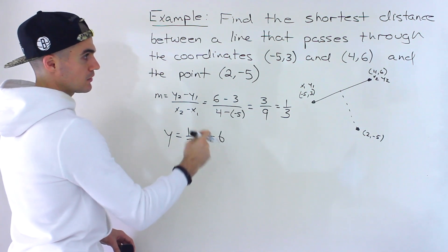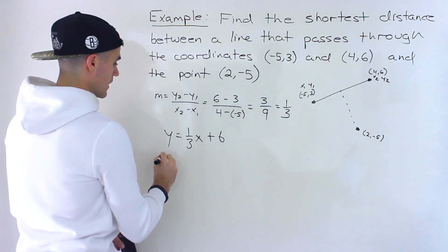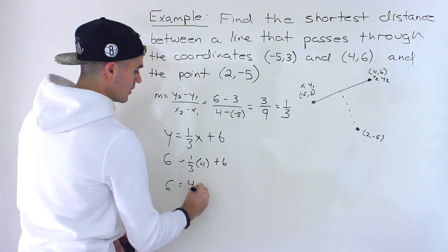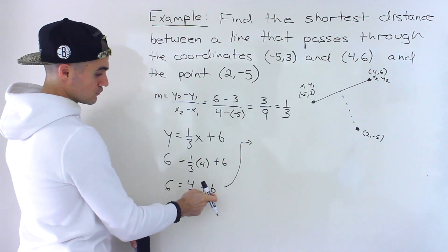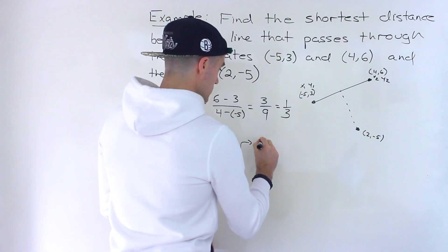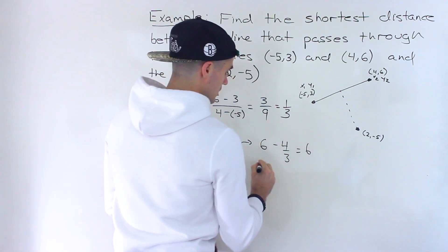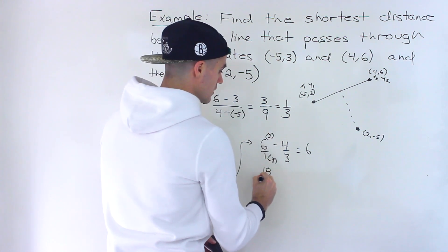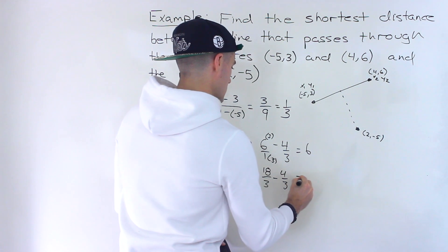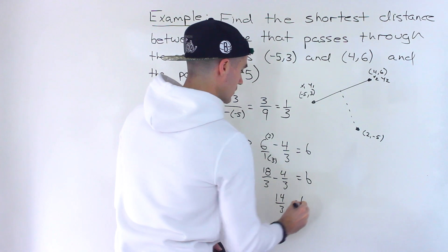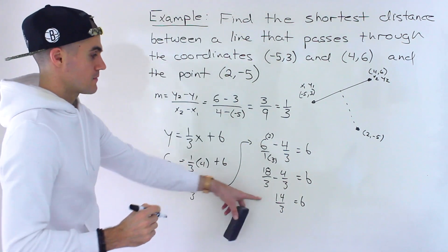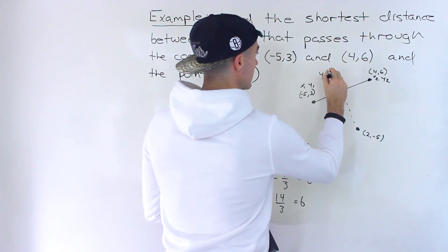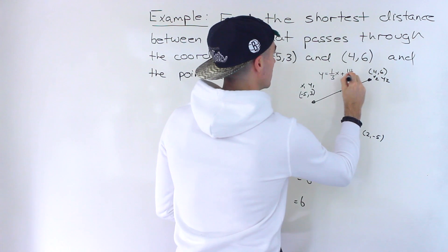So we've got y equals one-third x plus b. Now we solve for the b value by plugging in the point four and six: 6 equals one-third times 4 plus b, giving us 6 equals 4 over 3 plus b. Solving for b: 6 minus 4 over 3, converting to a common denominator of 3, gives us 18 over 3 minus 4 over 3, which equals 14 over 3. So the equation of this line is y equals one-third x plus 14 over 3.